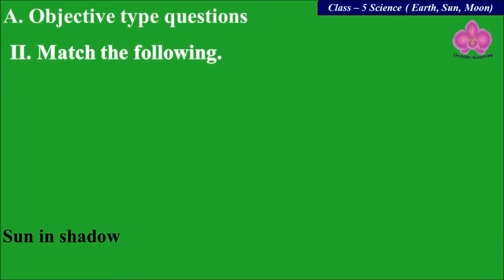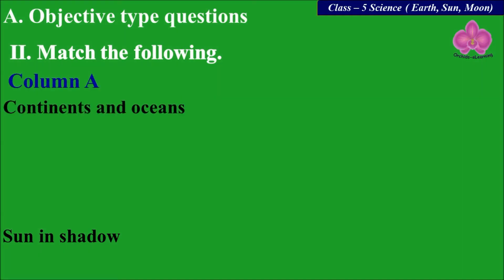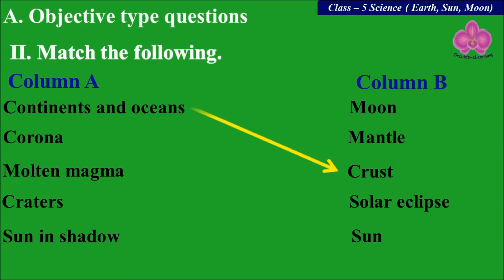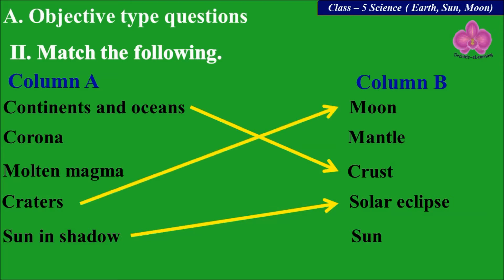Next question is Match the Following. You can write your answers in your notebook for practicing. The matchings are: Continents and oceans — Crust; Sun in shadow — Solar eclipse; Craters — Moon; Molten magma — Mantle; Corona — Sun.